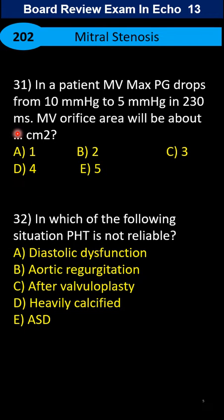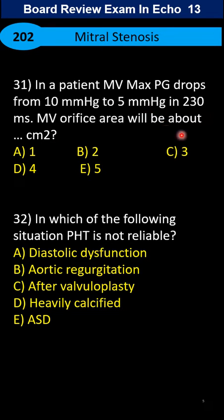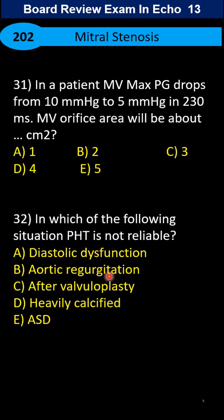Here, the patient has a measured peak velocity of the mitral valve inflow at 10 mmHg, and it drops to 5 mmHg in 230 milliseconds. Based on this finding, how much will the mitral valve orifice area be? And in which of the following situations is pressure half-time not reliable? There can be more than one correct answer.